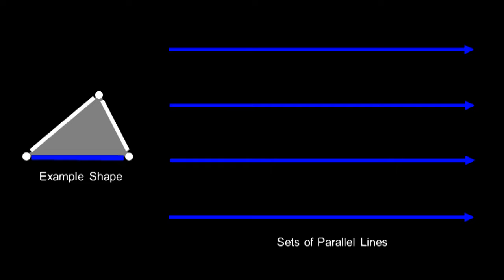Let's look at a simple example. We're going to start with a triangle as our input. For each edge of the triangle, we're going to create another set of parallel lines. So, there's one set of lines for the blue edge, one for the red edge, and one for the green edge.